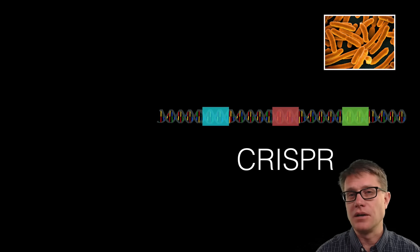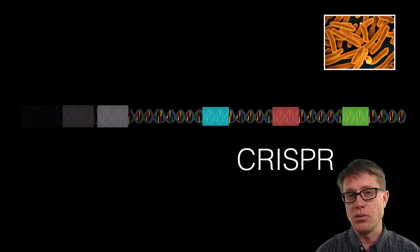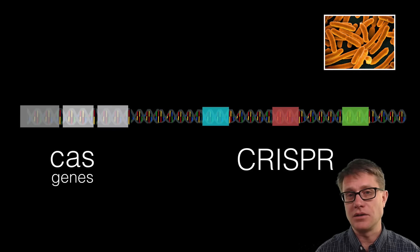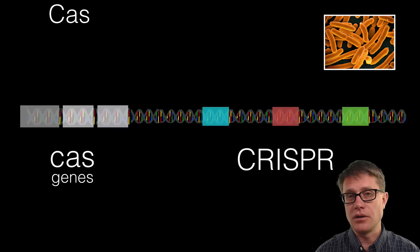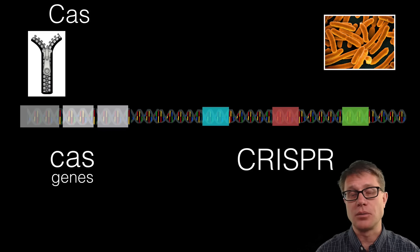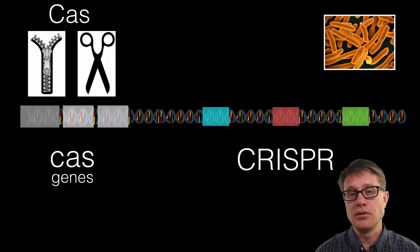They also identified a number of genes associated with CRISPR — these are the CRISPR-associated, or Cas, genes. Those Cas genes make Cas proteins. The Cas proteins in general are going to be helicases — proteins that unwind DNA — and then nucleases, those that cut the DNA.